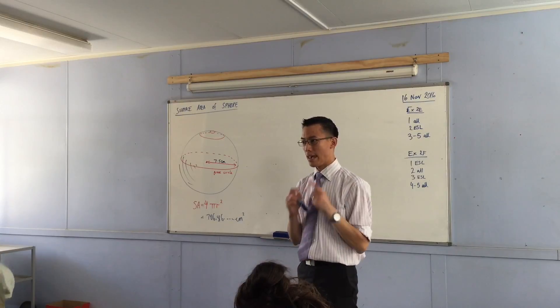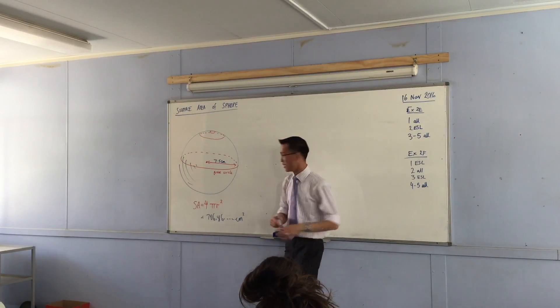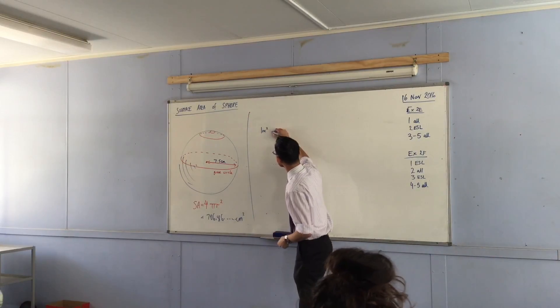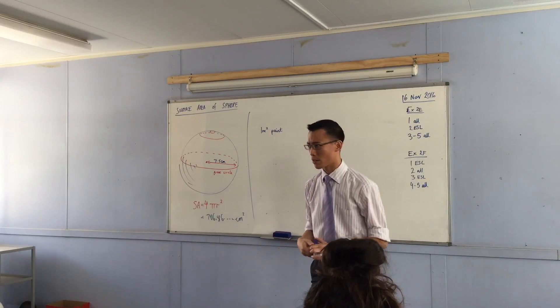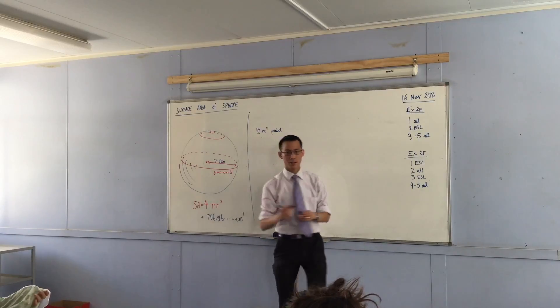Then you look at the question again. It says, how many such spheres can I paint if I've got enough paint to cover 10 square meters?